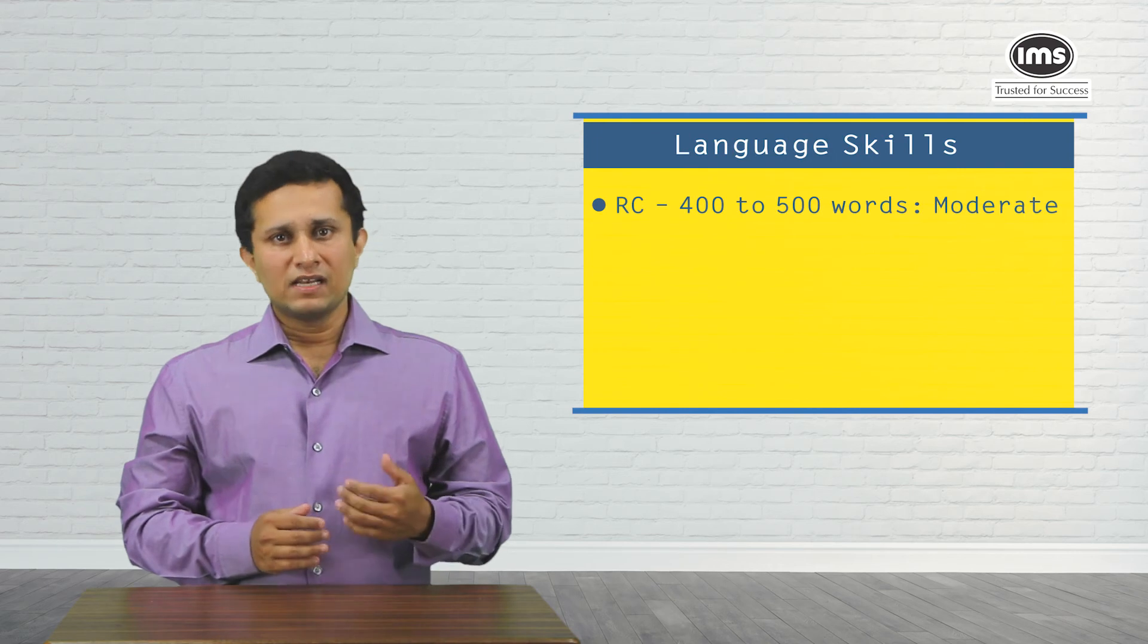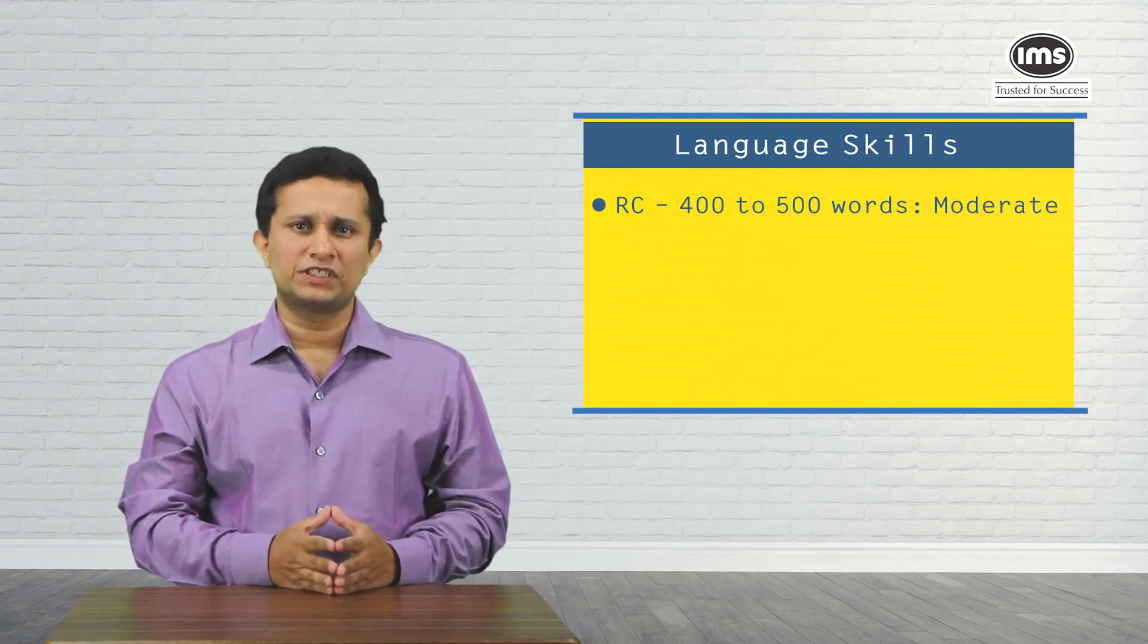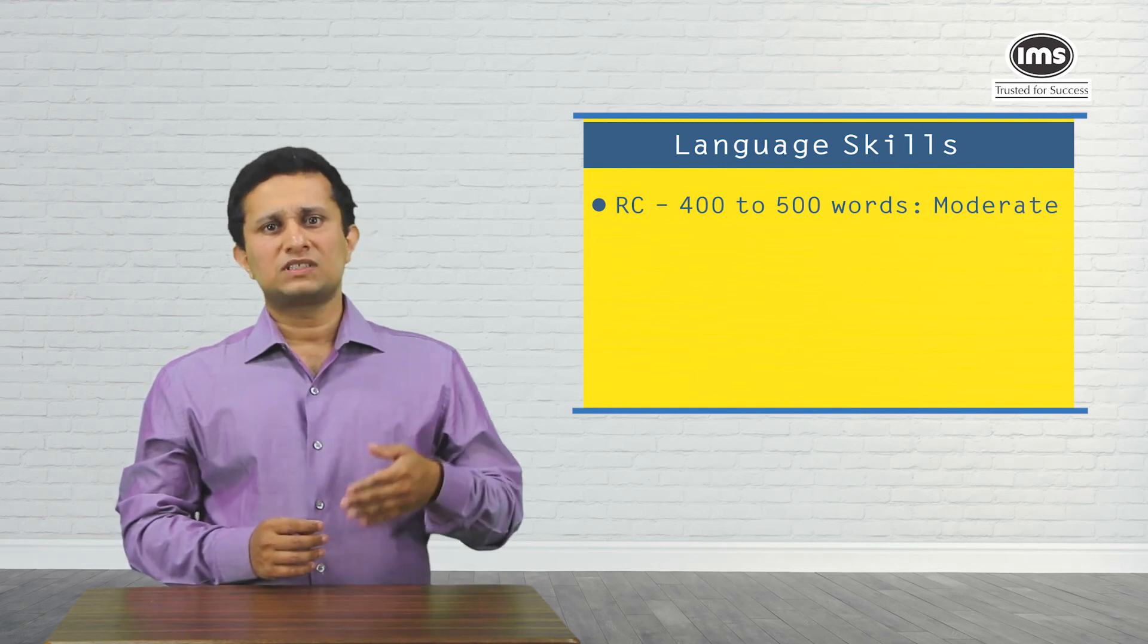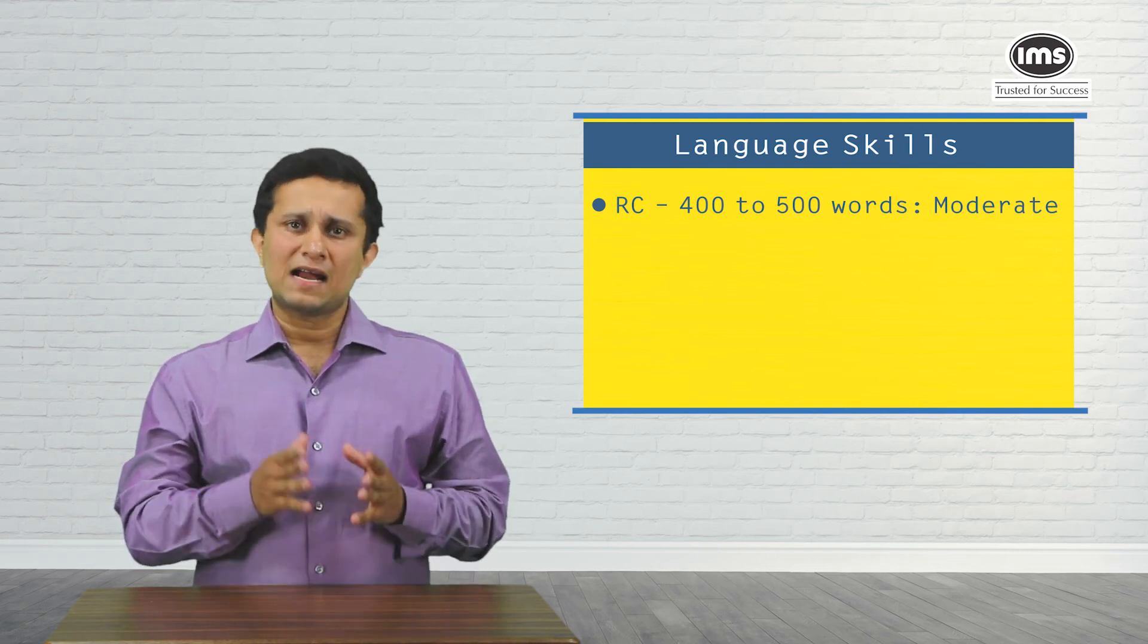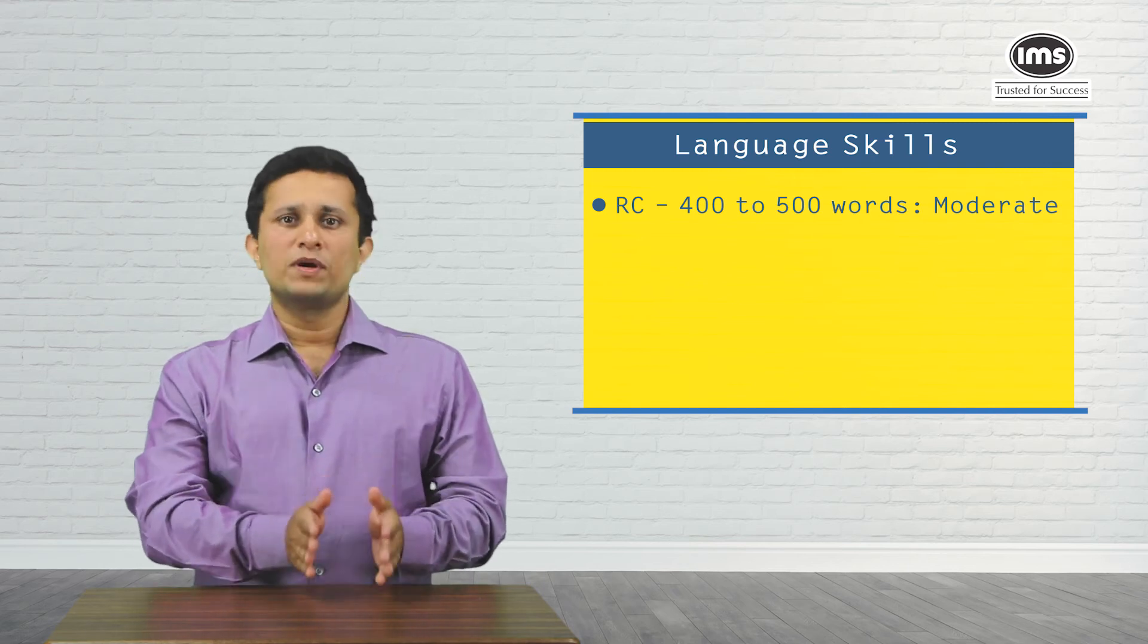Last but not the least, let's move on to the language skills or verbal ability section. Like each year, there were two passages. The length more or less average at 400 to 500 words with reasonably simple topics based on say education, pollution, etc. These were eminently readable and the questions though being inferential in nature were doable.